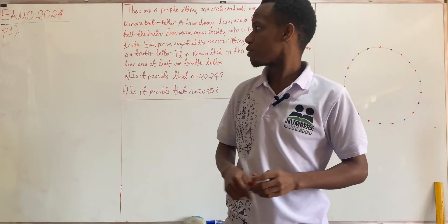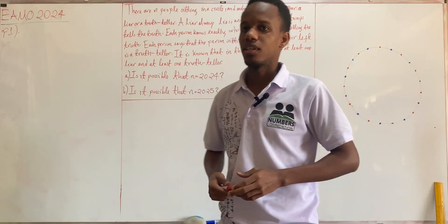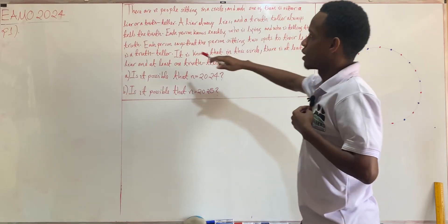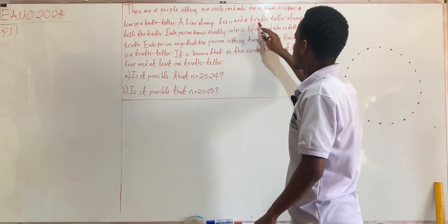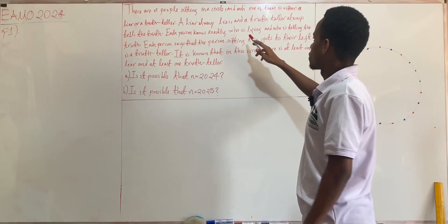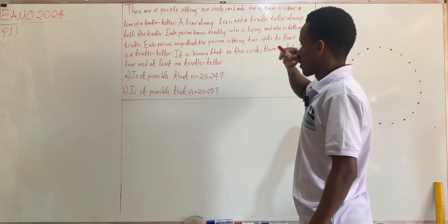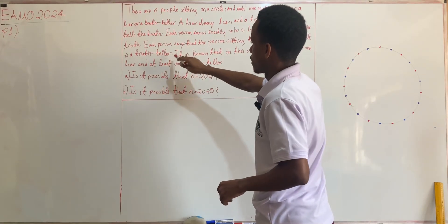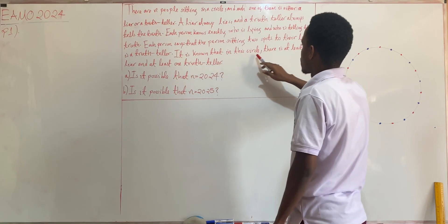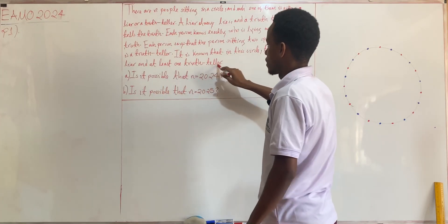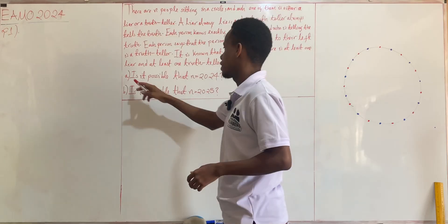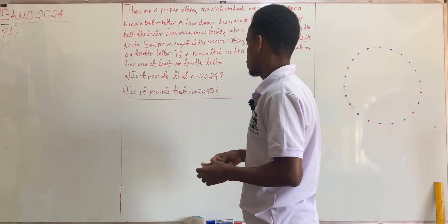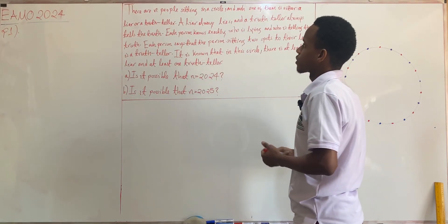Hi everyone, today we're going to look at a problem from the East African Math Olympiad 2024. There are n people sitting in a circle, and each one of them is either a liar or a truth-teller. A liar always lies and a truth-teller always tells the truth. Each person knows exactly who is lying and who is telling the truth. Each person says that the person sitting two spots to their left is a truth-teller, and it is known that in this cycle there is at least one liar and at least one truth-teller. Part A asks if it is possible that n equals 24, and Part B asks if it is possible that n equals 2025.